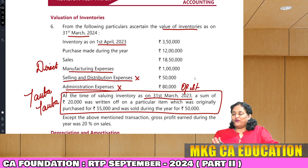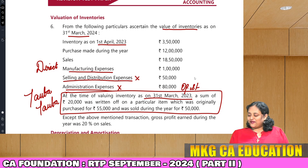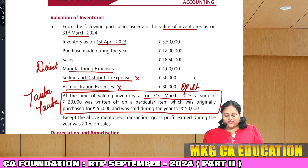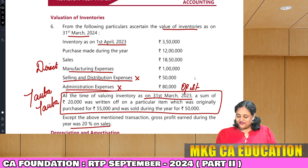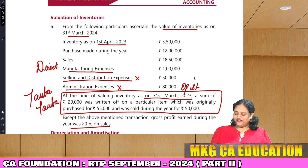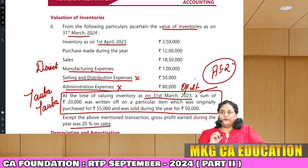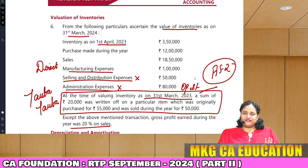This paragraph looks very dangerous, but moving ahead, the question says: except the above mentioned transaction, GP earned during the year was 20% on sales. This paragraph is based on AS-2 — exclusions from cost of inventories.